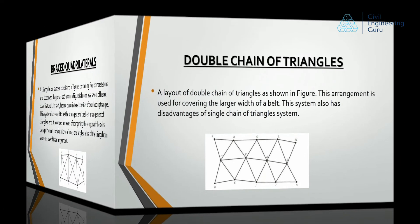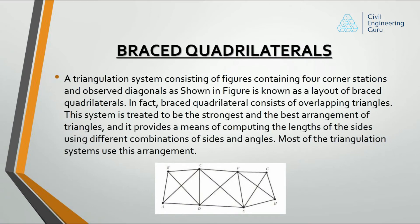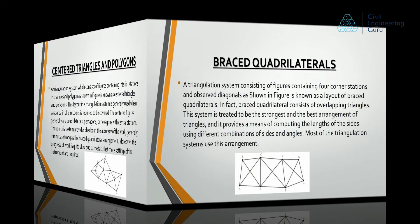Braced quadrilaterals: a triangulation system consisting of figures containing four corner stations and observed diagonals, as shown in the figure, is known as a layout of braced quadrilaterals. A braced quadrilateral consists of overlapping triangles. This system is treated to be the strongest and best arrangement of triangles, and it provides a means of computing the lengths of sides using different combinations of sides and angles. Most triangulation systems use this arrangement.